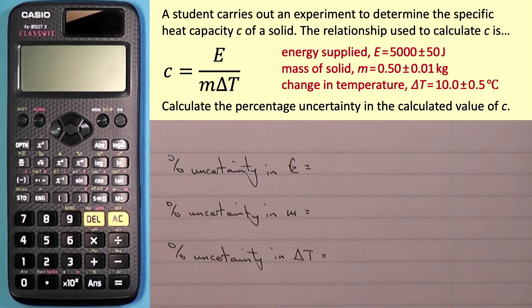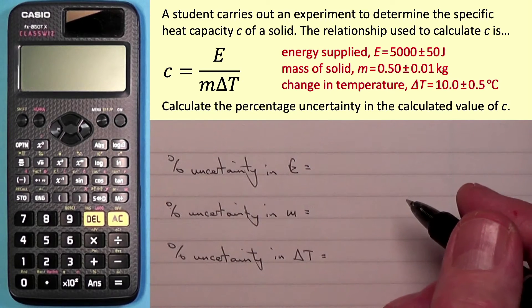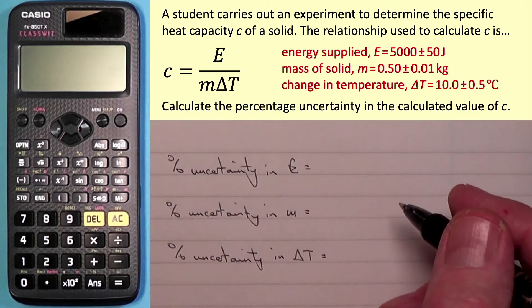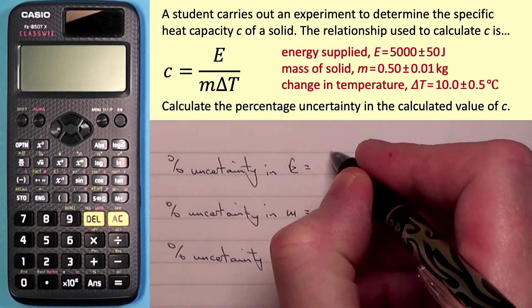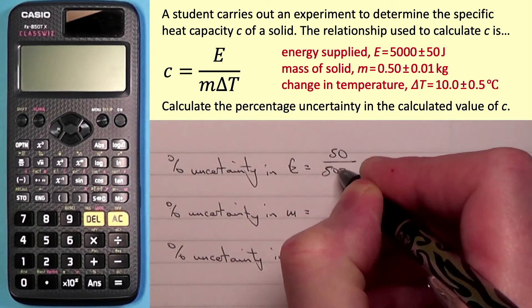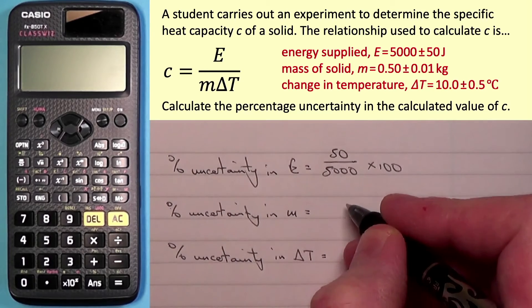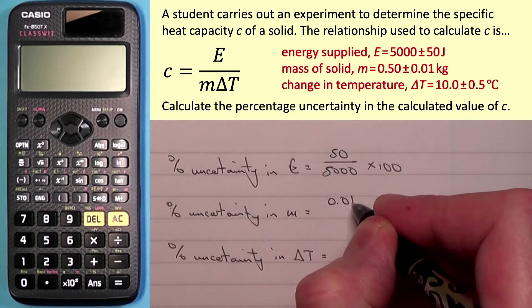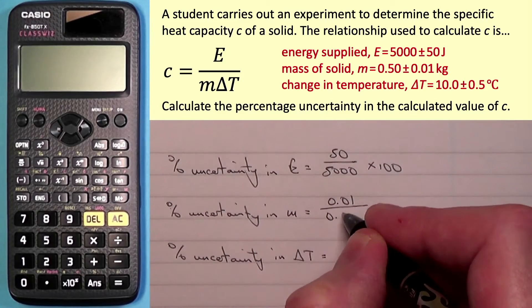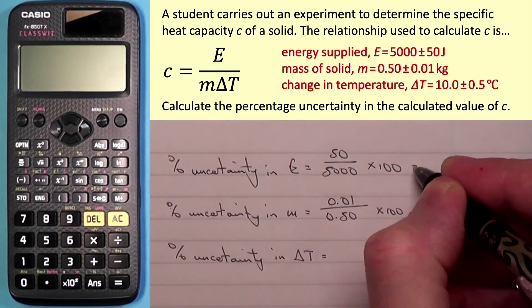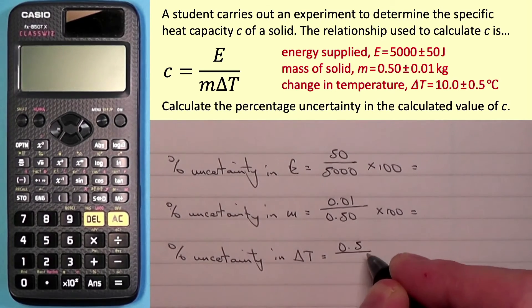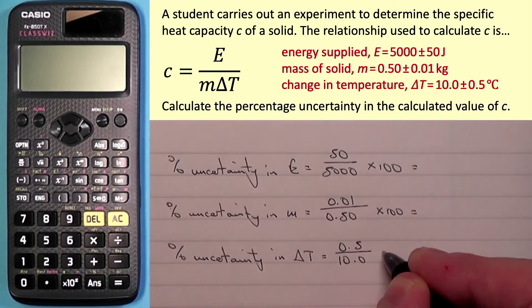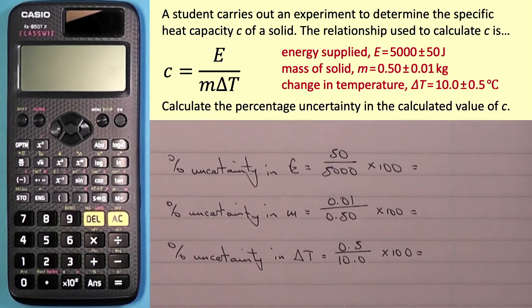To work out the percentage uncertainty, what you do is take the absolute uncertainty, in the case of energy that is 50 joules, and divide it by the actual measurement which is 5000, then multiply by 100. For mass that would be 0.01 divided by 0.50, then multiply by 100. And for change in temperature we do 0.5 divided by 10.0, then multiply by 100.